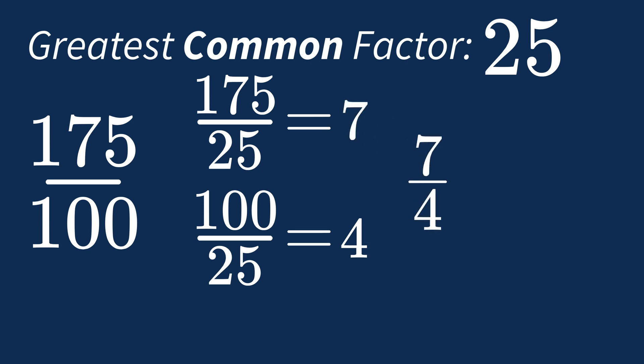To express it as a mixed fraction, we know that 7 over 4 equals 4 over 4 plus 3 over 4, and 4 over 4 is just equal to 1, giving us 1 and 3 quarters.